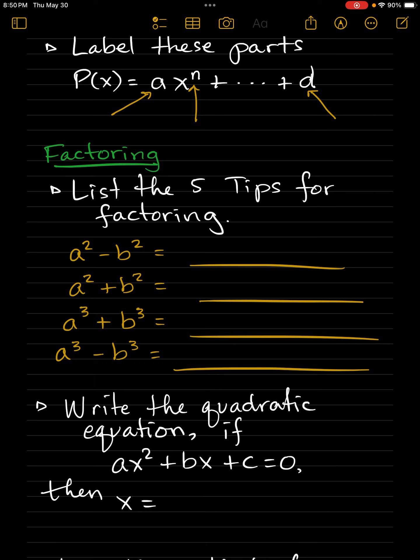Now, let's look at factoring. What are my five tips for factoring? I'll give you a hint. The first one is find the GCF. Now see if you remember how to factor the difference of two squares. I'll give you a hint: a plus b times—finish up all of these patterns for factoring.